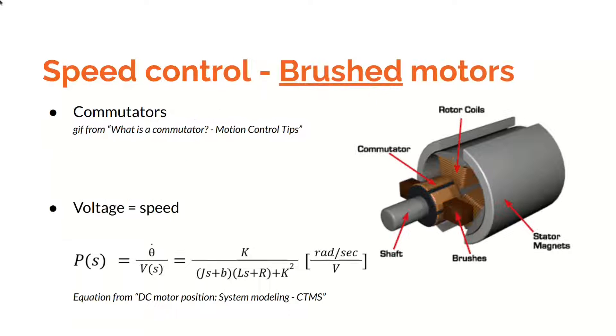Electric motors are controlled depending on their type. DC brushed motors have commutators, so supplying the motor with DC is enough to generate a rotating magnetic field, and the higher the voltage, the faster the motor will spin.